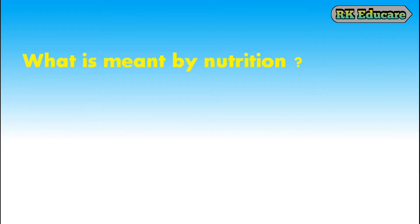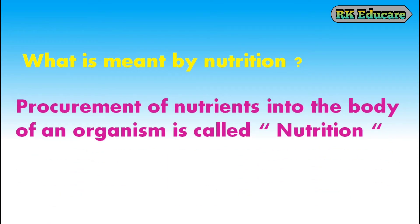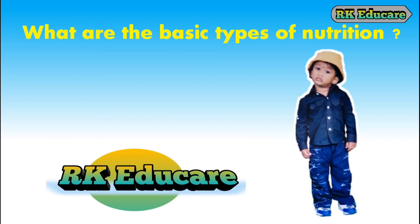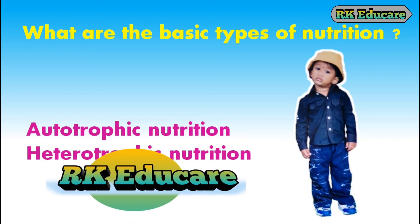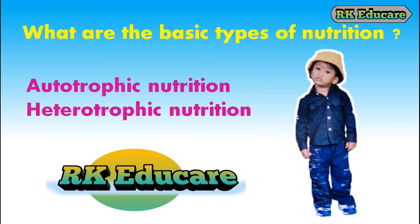What is meant by nutrition? Procurement of nutrients into the body of an organism is called nutrition. What are the basic types of nutrition? Autotrophic nutrition and heterotrophic nutrition are the basic types of nutrition. Along with these two, we can also see symbiotic nutrition.